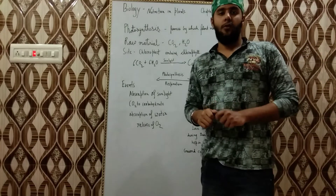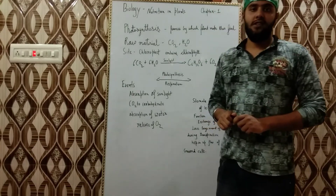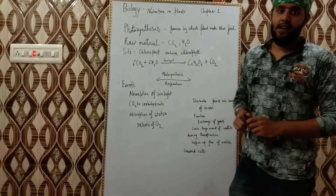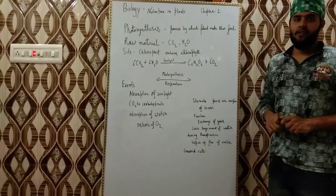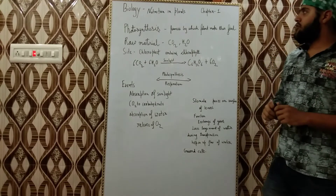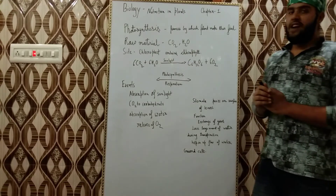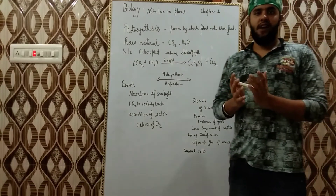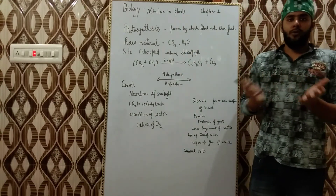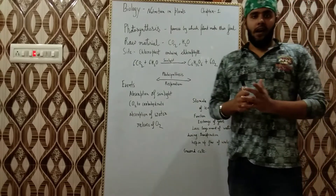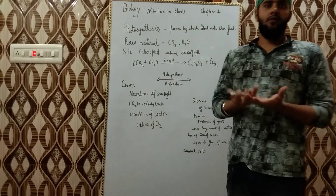Welcome again to the next topic of biology chapter 1, that is nutrition in plants. When we talk about nutrition in plants, plants are autotrophic — they make their own food.